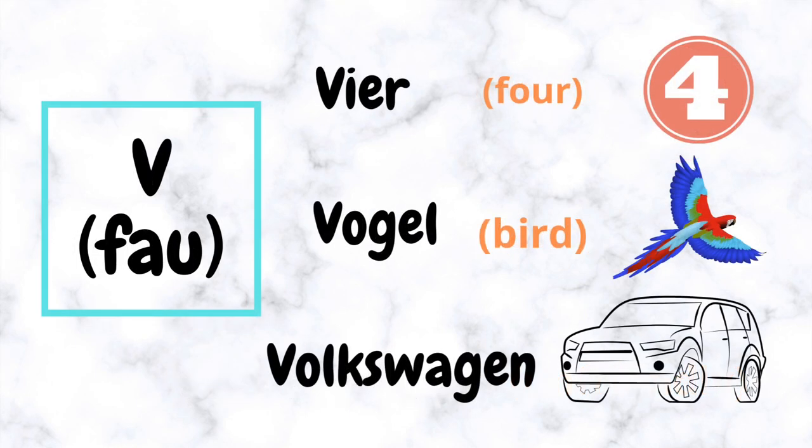V (Fao) — the letter V has the sound of F in German. For example: Vier, Vogel, Volkswagen.